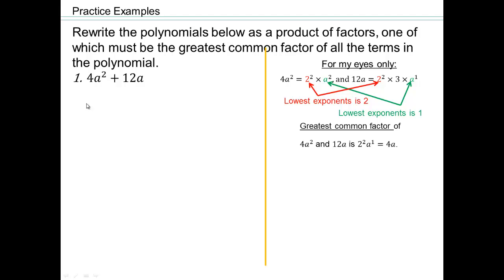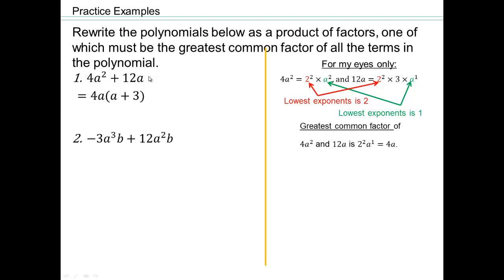Now we rewrite the expression by pulling out the common factor. We write 4a times what gives 4a squared? The 4 is already out, and a times a gives a squared. 4a times what gives 12a? That would be 3, since 4a times 3 equals 12a. So using the distributive property, 4a squared plus 12a factors as 4a times the quantity a plus 3.